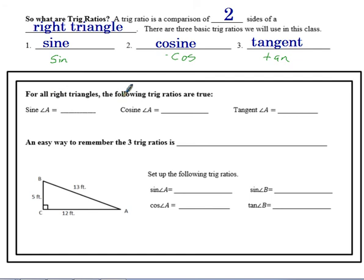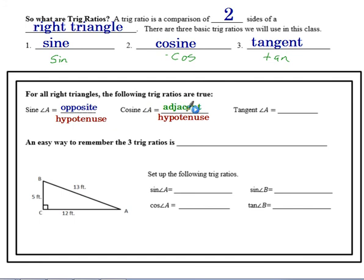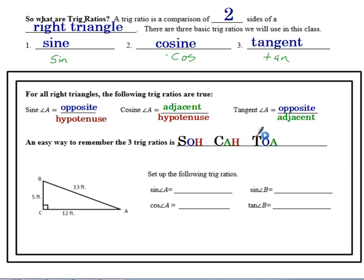For all right triangles, the following trig ratios are true for a given reference angle A: sine of A equals opposite over hypotenuse; cosine of A equals adjacent over hypotenuse; and tangent of A equals opposite over adjacent. An easy way to remember this is the phrase SOHCAHTOA — SOH for sine opposite hypotenuse, CAH for cosine adjacent hypotenuse, and TOA for tangent opposite adjacent.